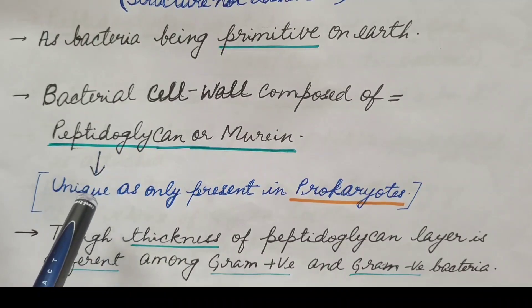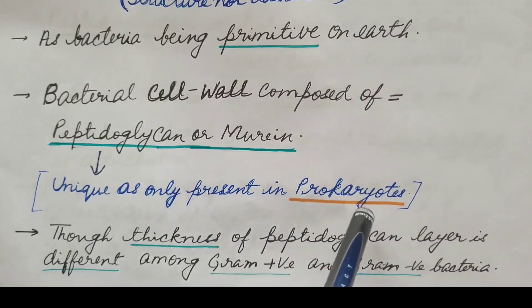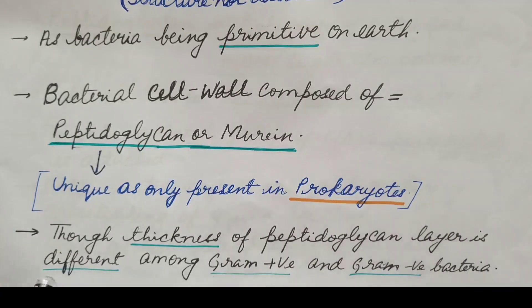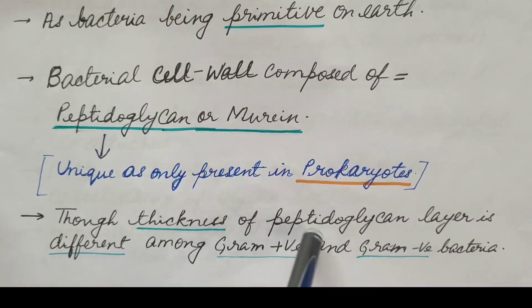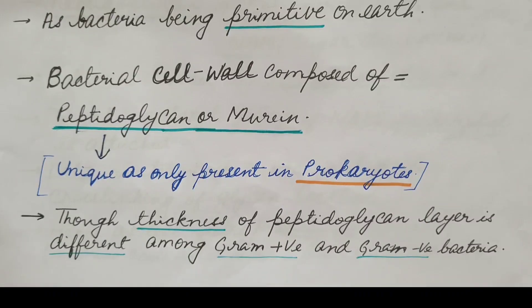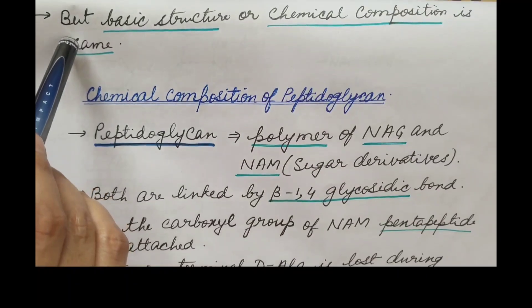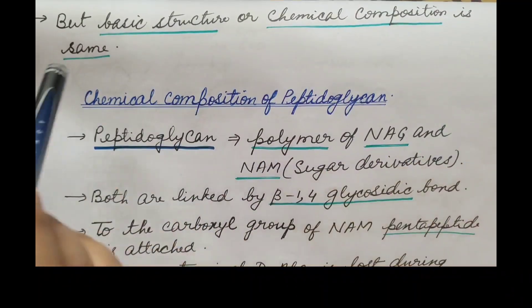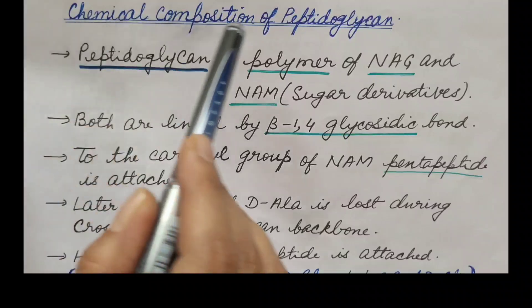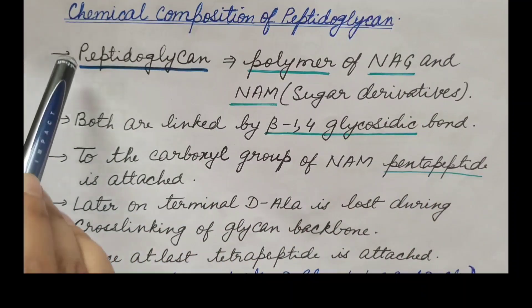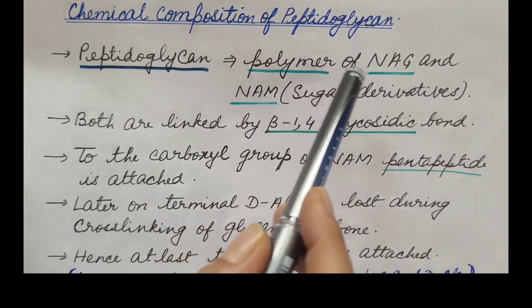Peptidoglycan is unique because it is present only in prokaryotes. The thickness of the peptidoglycan layer differs between gram positive and gram negative bacteria — it is thick in gram positive and thin in gram negative — but the basic structure and chemical composition is the same. Let us discuss the chemical composition of peptidoglycan.